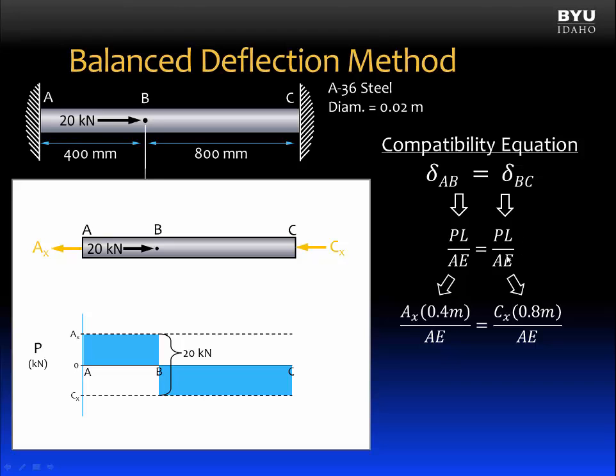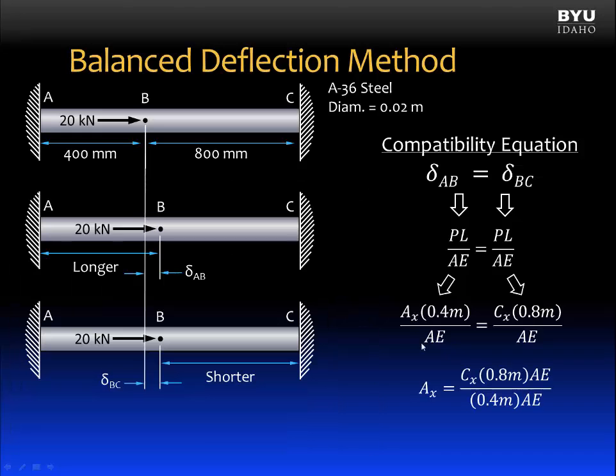In the delta BC equation, the internal force P is CX. And the length over which it's acting is the length from B to C, which is 800 millimeters, or 0.8 meters. Solved for AX, we see that the AEs cancel out. And we can get a term for AX in terms of CX. In this case, AX is equal to 2 times CX.